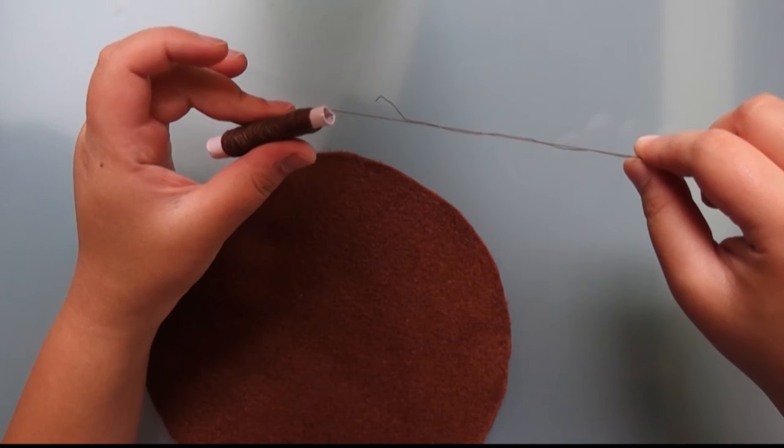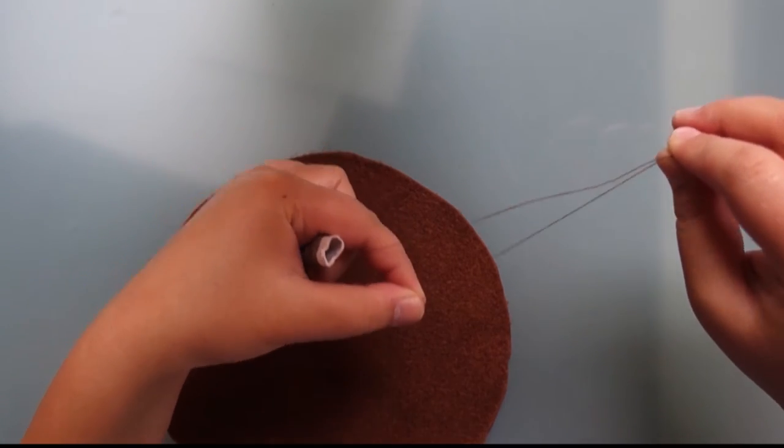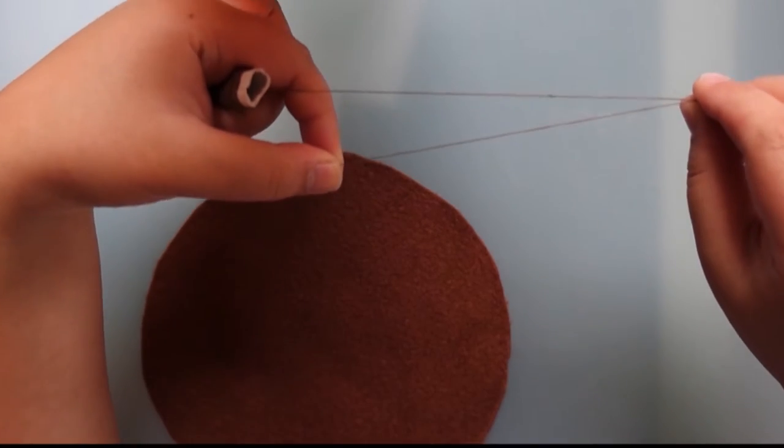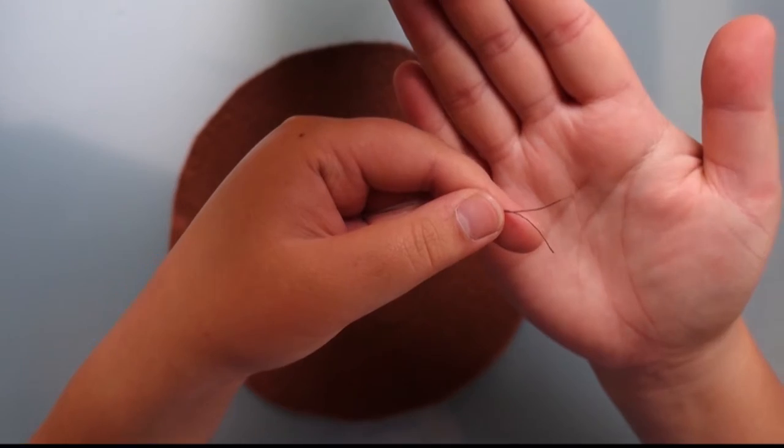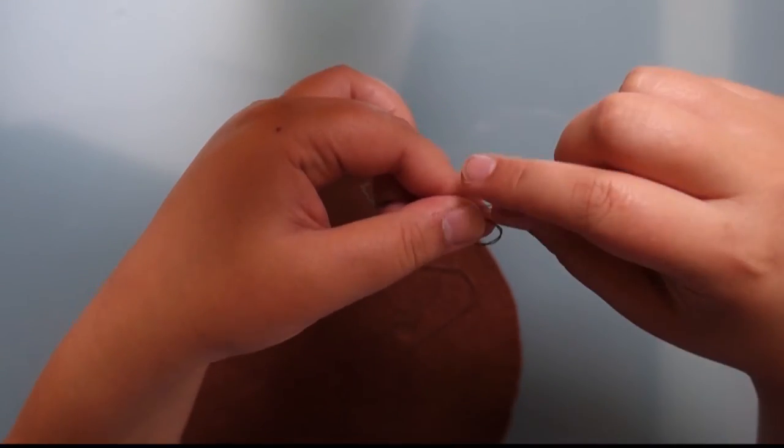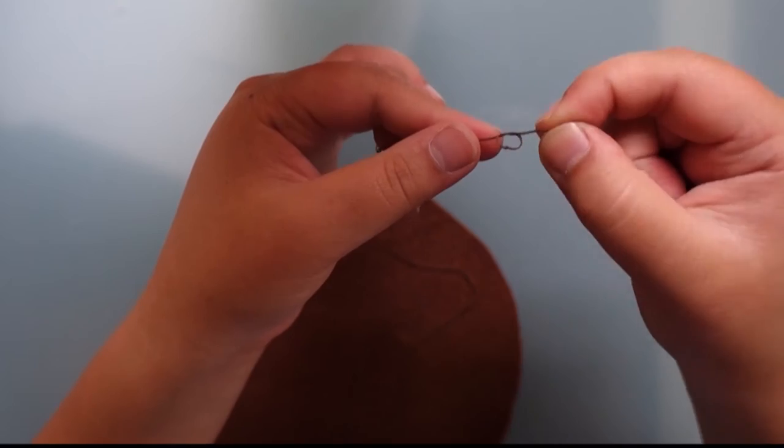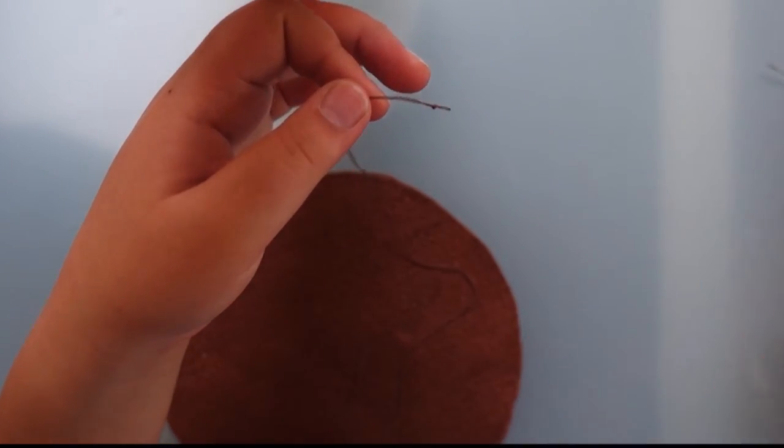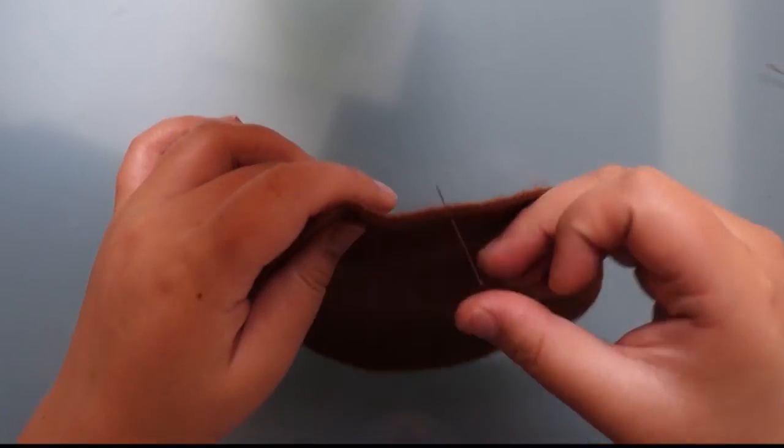Next I want to grab my brown thread and I'm going to double thread it as usual with all Kartika Creations felt projects. And I'm going to create a knot at the end. Then I want to trim off the excess thread and start my running stitch.